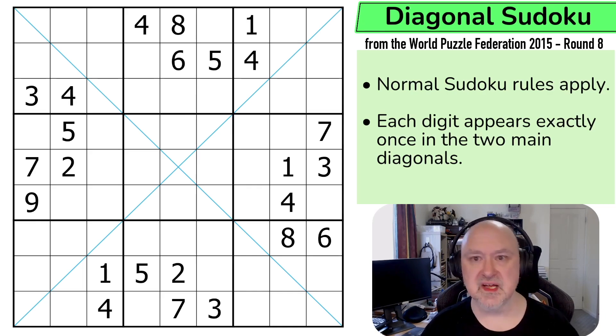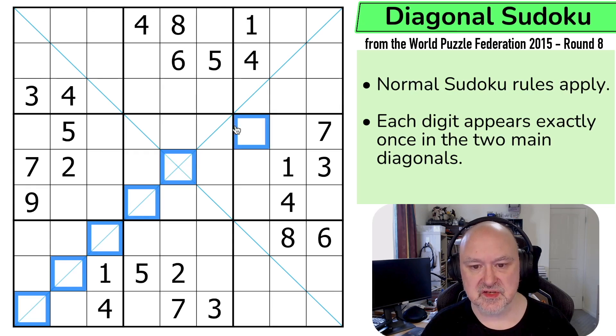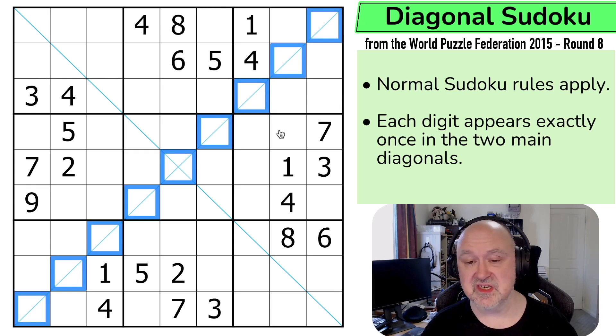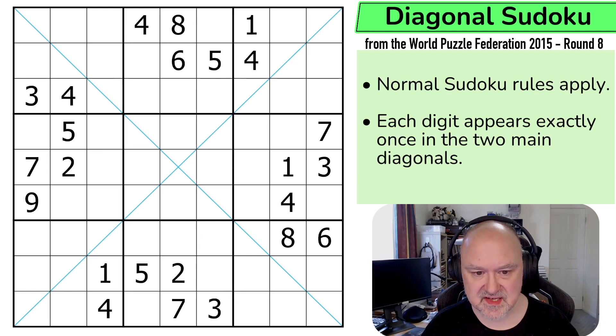Let's have a look at the rules and then give it a try. So normal Sudoku rules apply. In every box, in every row, and in every column, the digits 1 to 9 must be placed without repetition. And then each digit appears exactly once on the two main diagonals. These two main diagonals are 9 cells long and must contain each of the digits without repetition as well. I'm going to restart the puzzle to restart my timer. Let's give this a shot.